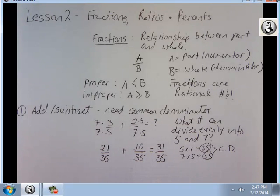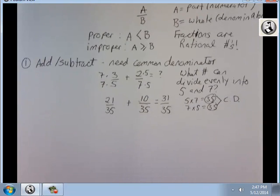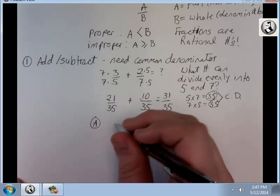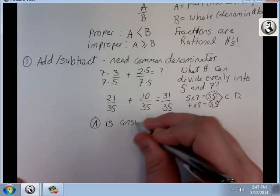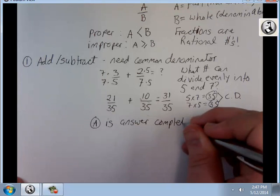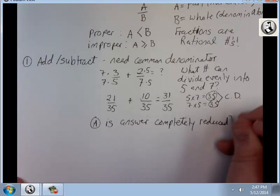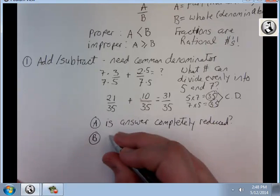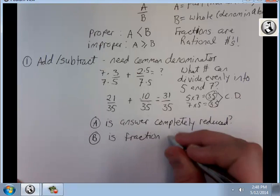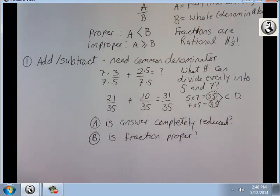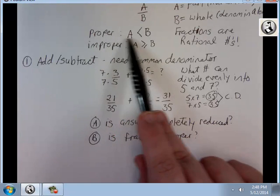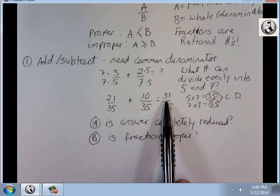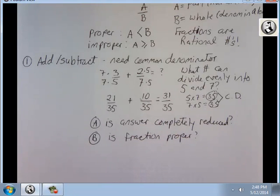Now, once you have your answer, you have to ask yourself a couple questions. First, is the answer completely reduced? In this case, it is. There is not a number that will divide into both 31 and 35. Second, is the fraction proper? And this one is. A has to be less than B, and we know 31 is less than 35. So our fraction is reduced and proper. We're done.